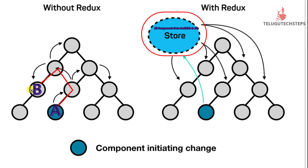Now we use Redux with a centralized store. Any component's data is stored and updated in the centralized Redux store. If you have component data, you can fetch it easily. For example, components C, E, F, G, H — all these different components in the application can easily get data from the store.